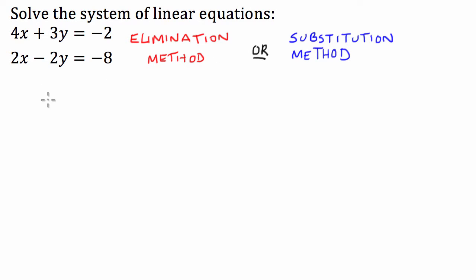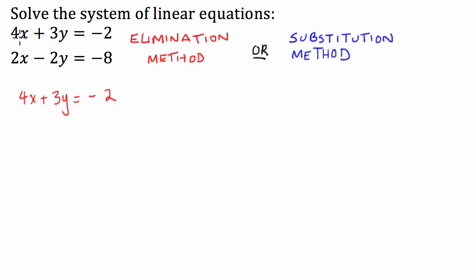Let's start with the elimination method. What we have to do here is multiply one of the equations — I'm going to use the second one. We multiply it by a number so that when we subtract it from the other one, we can eliminate one of our variables. I'm going to multiply the second linear equation by 2. So the first equation remains constant: 4x plus 3y equals negative 2. However, the second one, multiplied by 2, becomes 4x minus 4y equals negative 16.